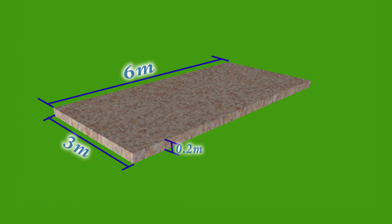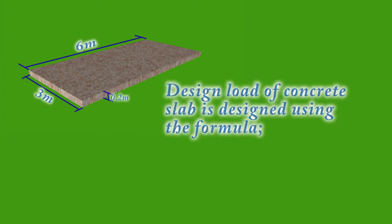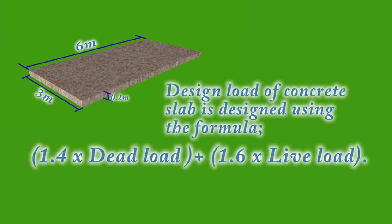Design load of concrete slab is calculated using the formula for ultimate load: 1.4 times dead load, plus 1.6 times live load.